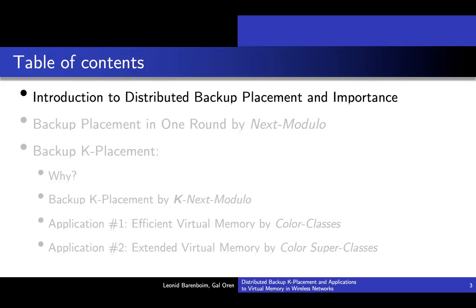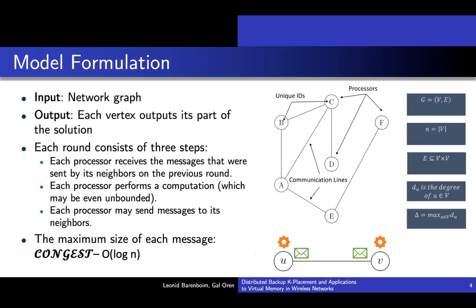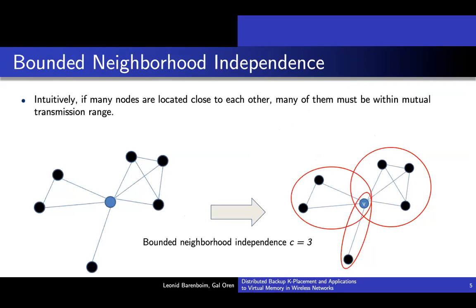So let's start with some intro to the topic. We consider the backup placement problem in networks in the congested distributed model. Given a network graph GVE, in which each vertex represents a processor and has a unique ID, and the edges represent communication lines on which messages of size O(log N) can be transferred. Graphs with neighborhood independence bounded by a constant are a special focus for us. Neighborhood independence is the maximum number of independent neighbors a vertex in a graph has, while two vertices are considered independent from each other if there is no edge connecting them.